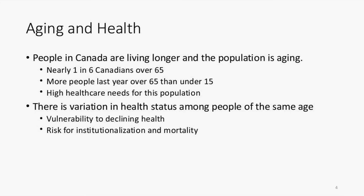People in Canada are living longer and the population as a whole is getting older. For the first time in this country's history, there were more people over the age of 65 than under the age of 15 — that's nearly one in six — and there are well-documented high healthcare needs for this population. There's also variation in health status among people of the same age, and as this variation increases, there's a vulnerability to declining health and a risk for institutionalization and mortality. This variation in health status is commonly called frailty.